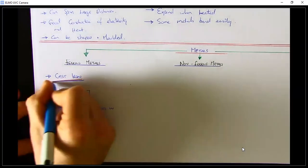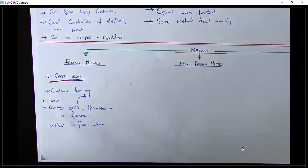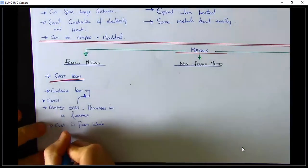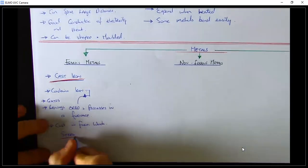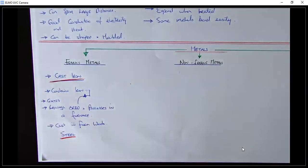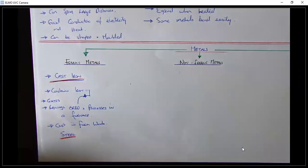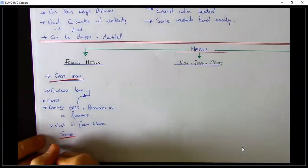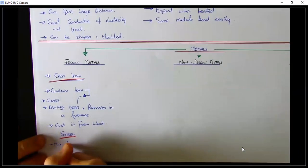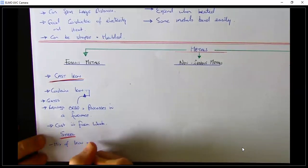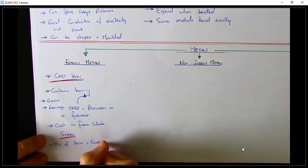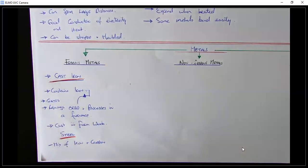The second ferrous metal is steel — a really common one you'll see in farm sheds and big industrial buildings, most of which are made from steel. Steel is a mix of iron and carbon. There are three types of steel.